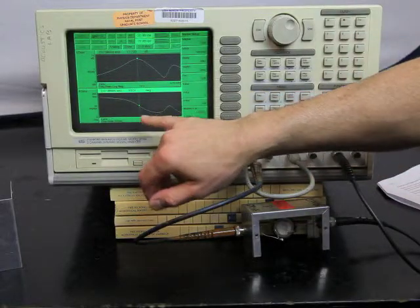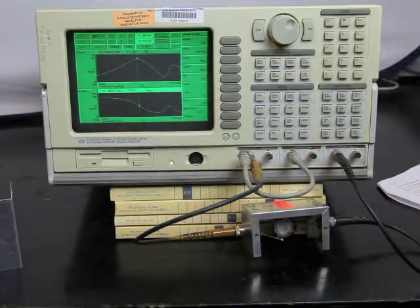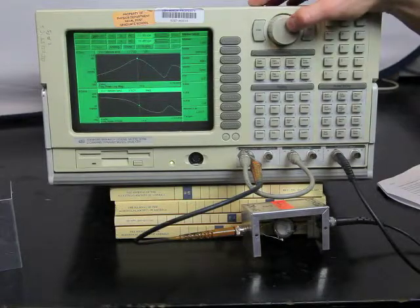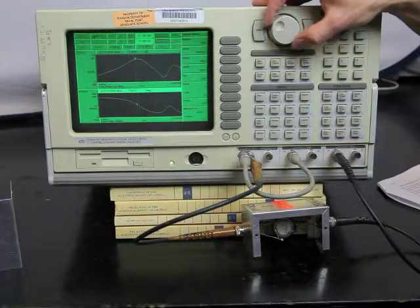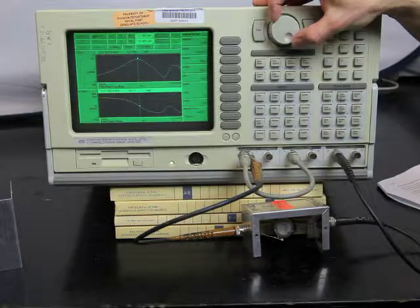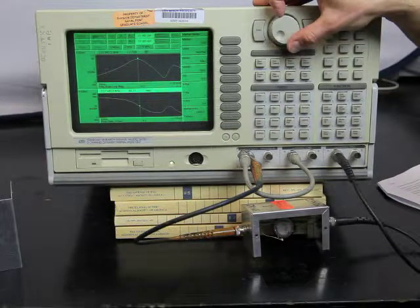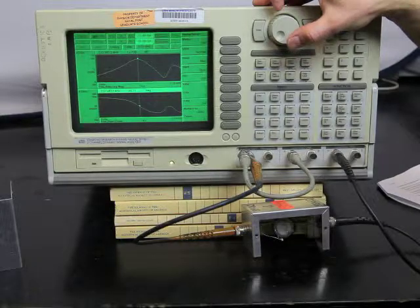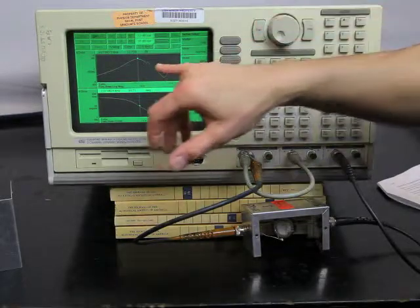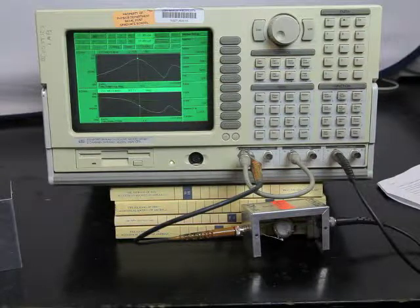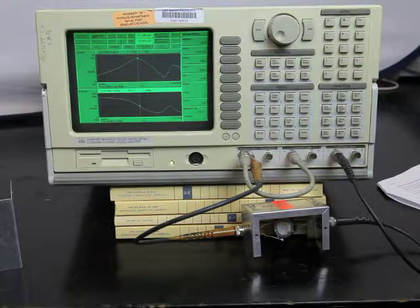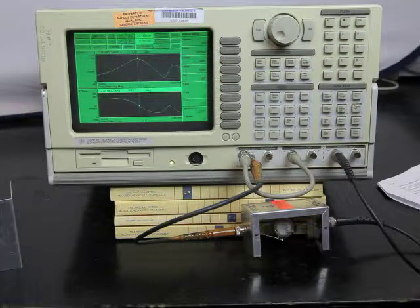Now we find the peak again right here at 2.0739 kilohertz with a magnitude of 12.72 dB. Notice how the phase is 93 degrees. If I move the cursor so that it reads 90 degrees, somewhere in between these two data points, we see that I'm a little bit off the resonant peak, just a small amount, 2.0746 kilohertz.